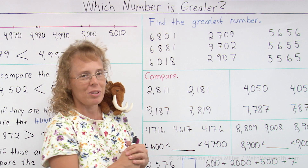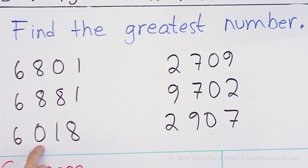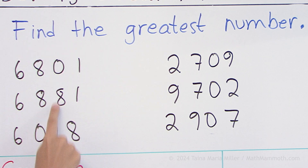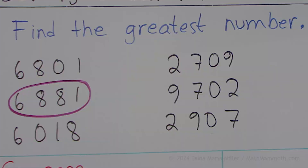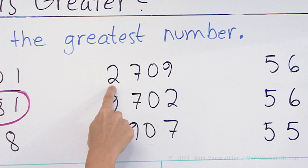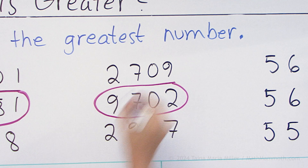We can use those principles right here — find the greatest or biggest number among these three. All of these numbers have six thousand. This one has zero hundreds, and these two have eight hundred. Then we go to the tens, and there we see eight tens wins over zero tens, so this one was the biggest number. How about here? Start from the thousands: two thousand, nine thousand, two thousand — we don't need to go any further. Nine thousand something is obviously the biggest number.